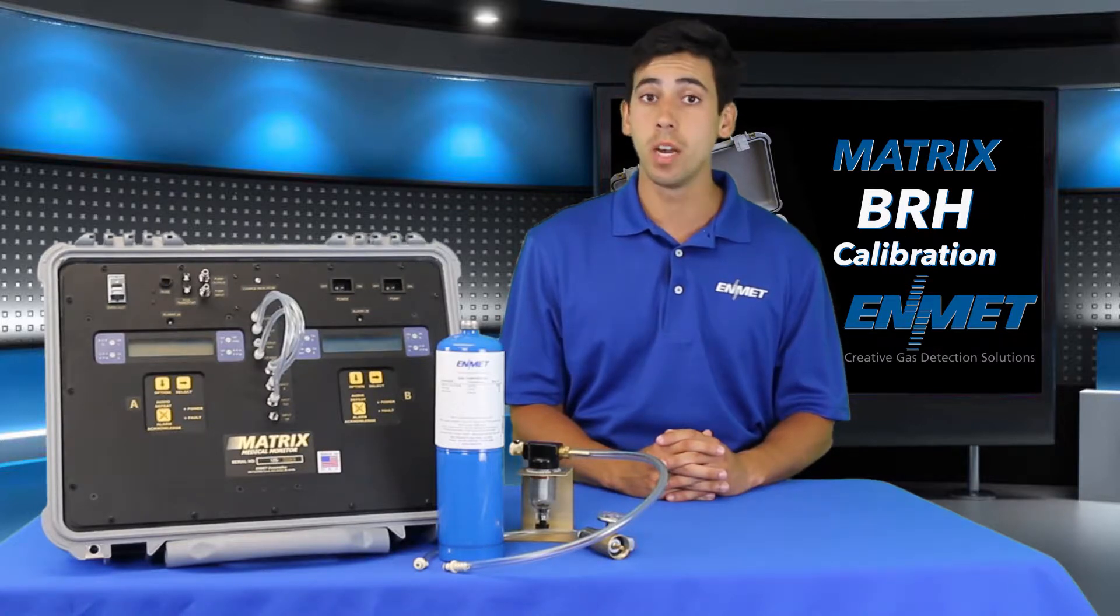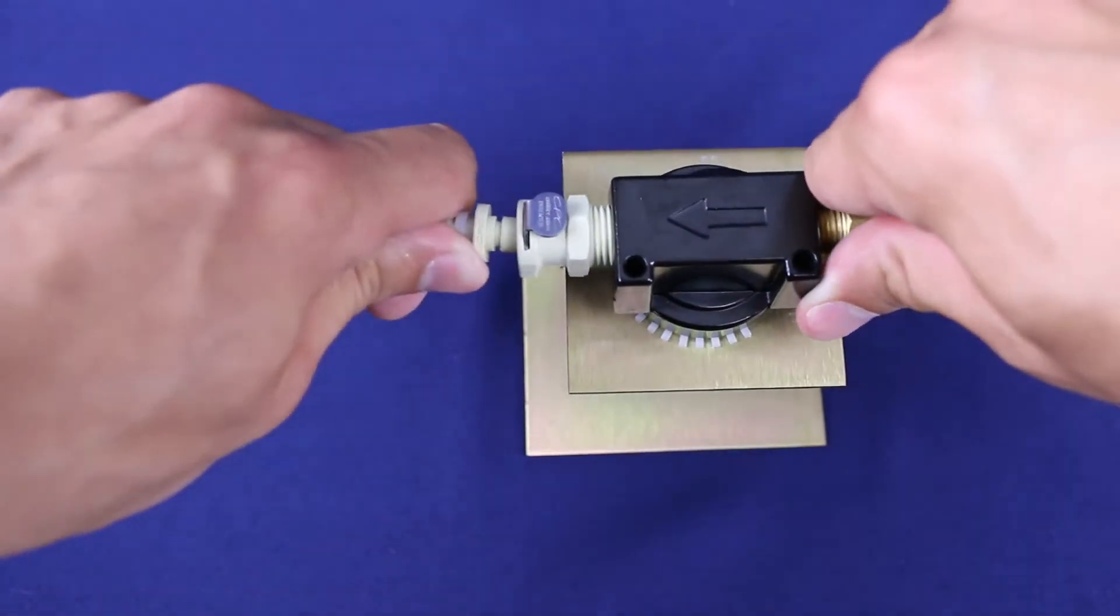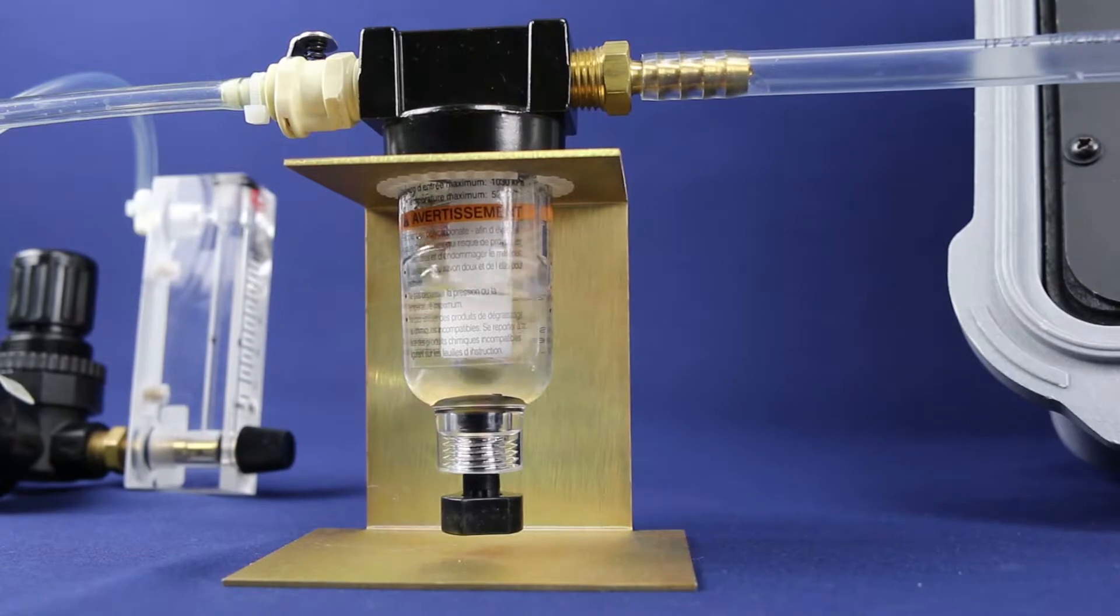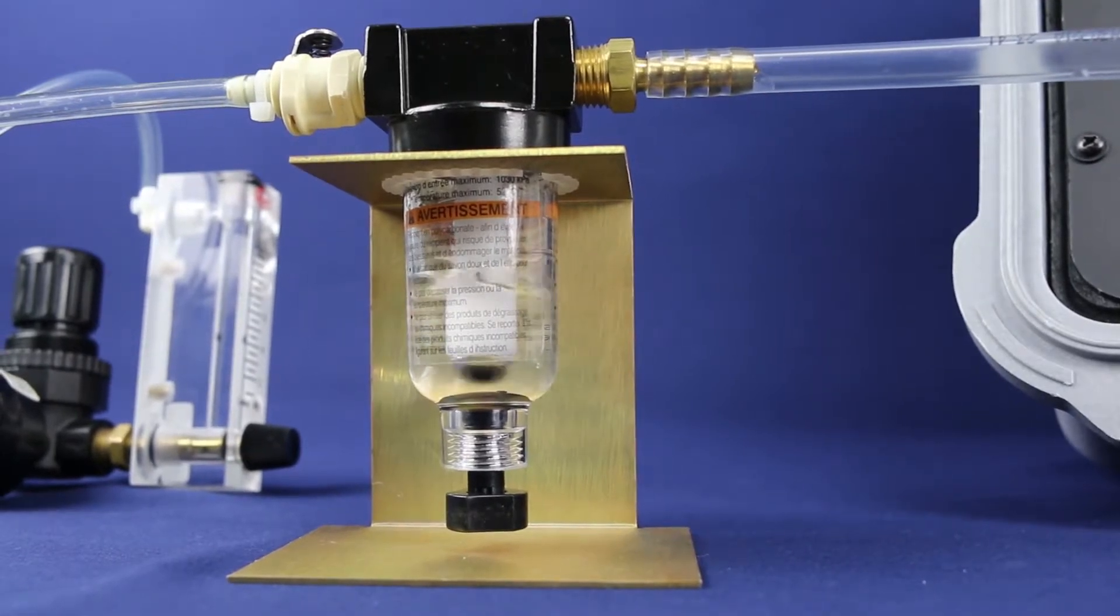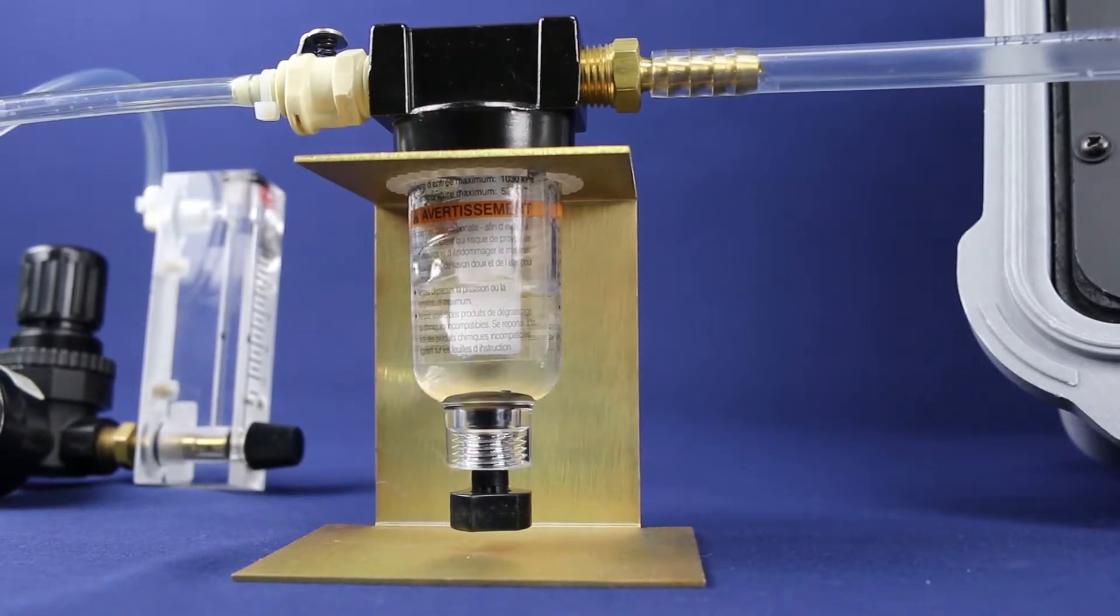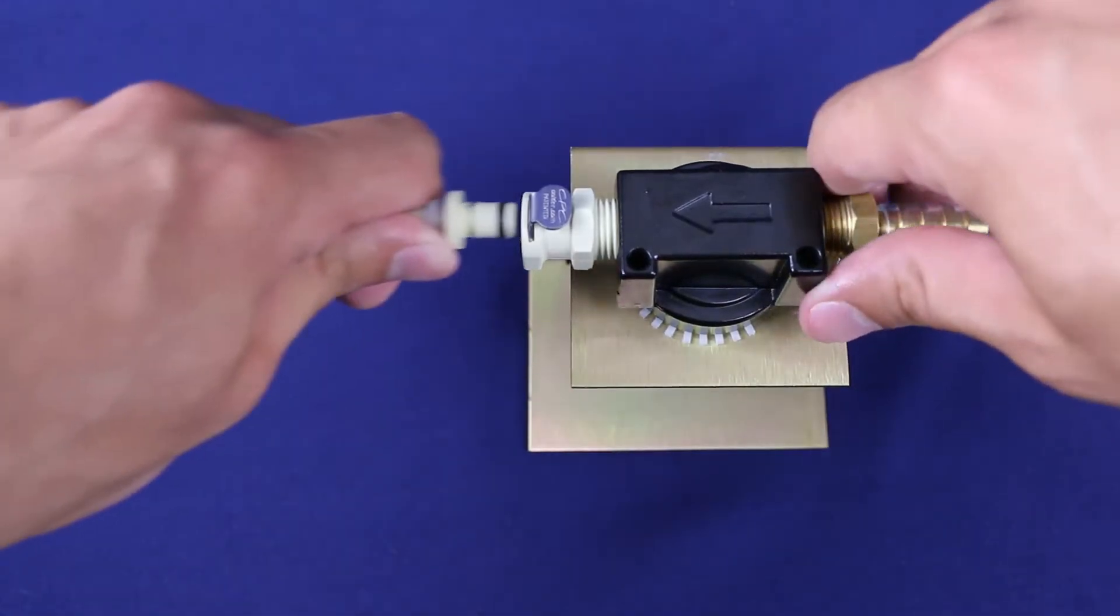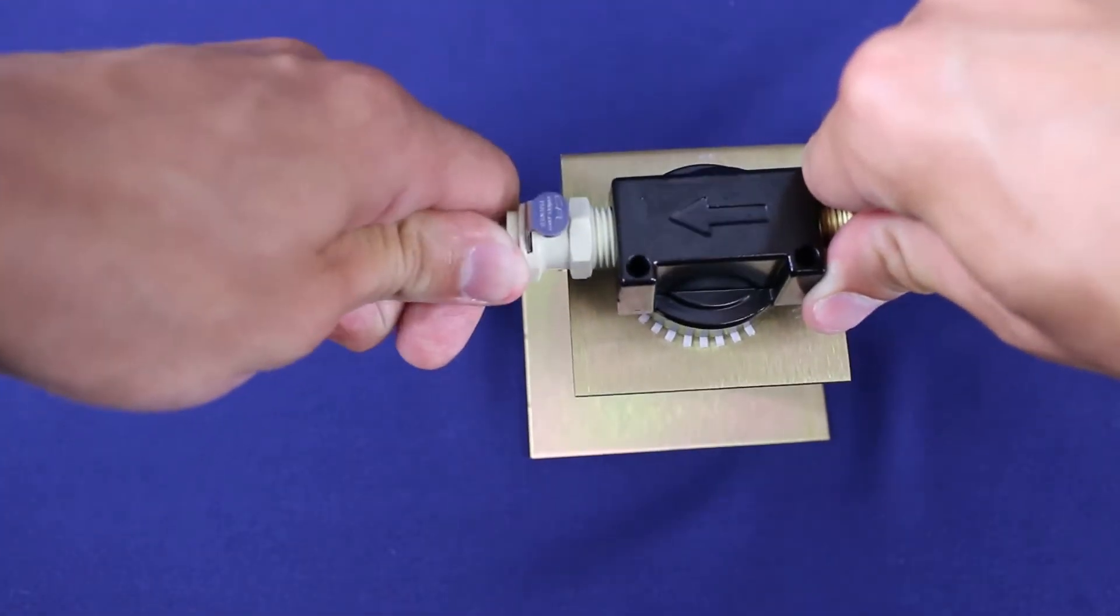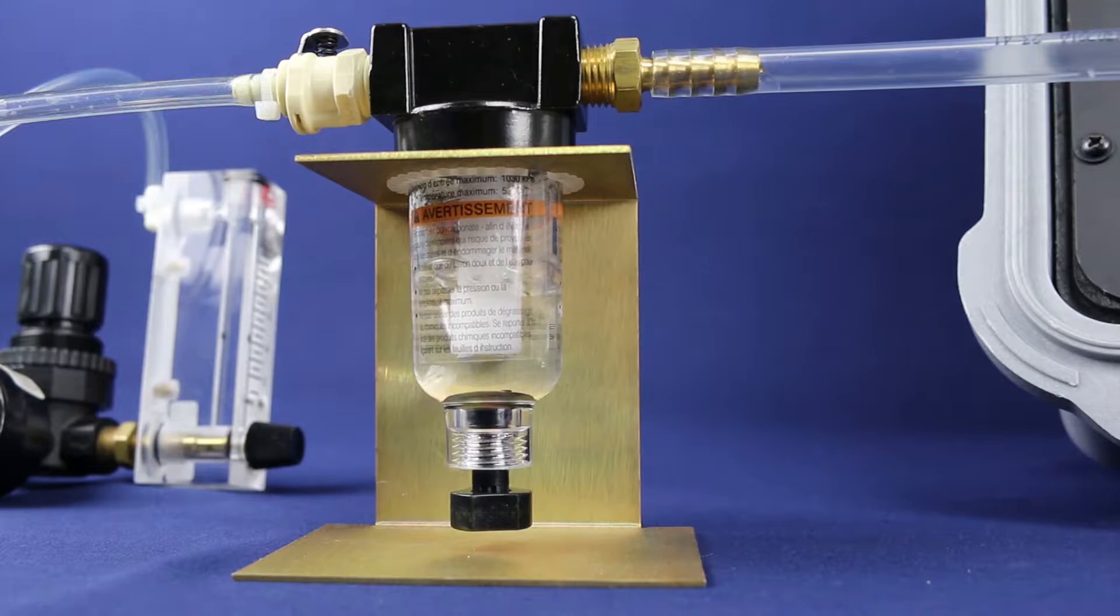The bubbler assembly must be attached with the arrow pointing at the supplied air source. Use caution and make sure that you hook up your bubbler assembly correctly. If incorrectly hooked up, water can get into your matrix unit causing damage to the sensors.